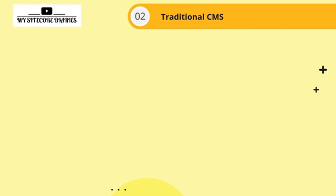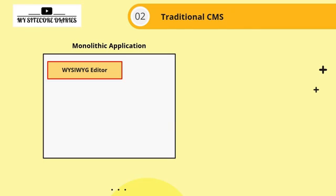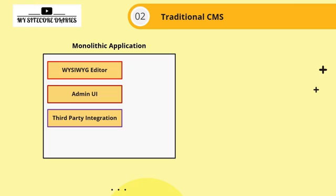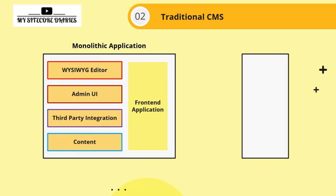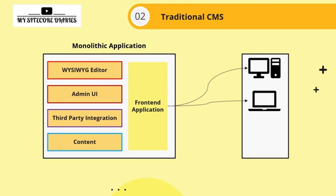Now, how does a traditional CMS look? It is essentially a monolithic application containing a WYSIWYG editor, administrator UI, third-party integrations, content storage, and a front-end — all tightly coupled. Although you may have separate delivery and CM servers, the application is the same and tightly bound. This renders different digital touchpoints like desktop, laptop, or mobile using responsive mechanisms like Bootstrap.